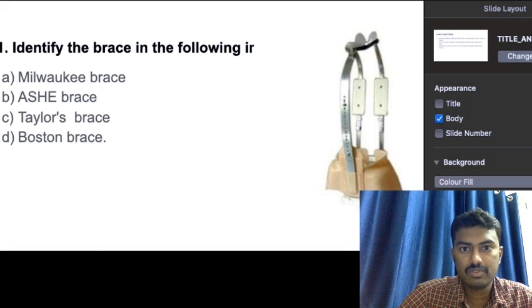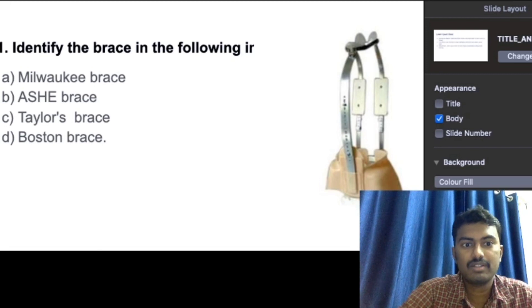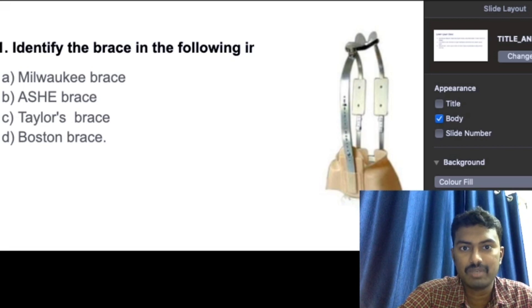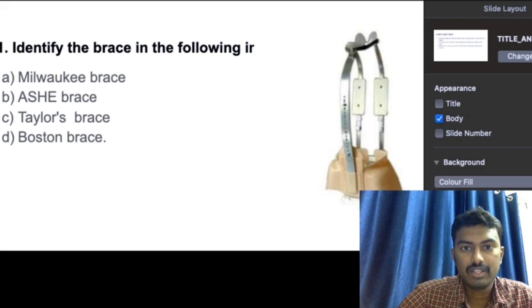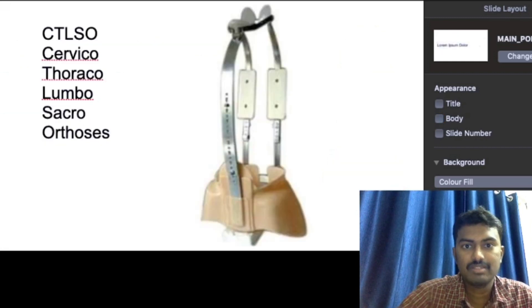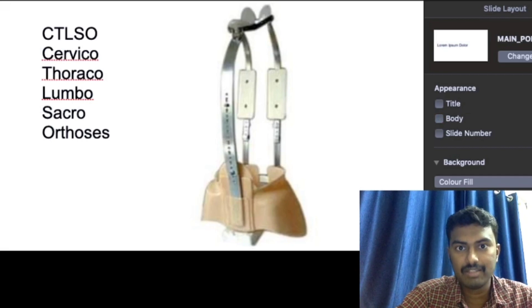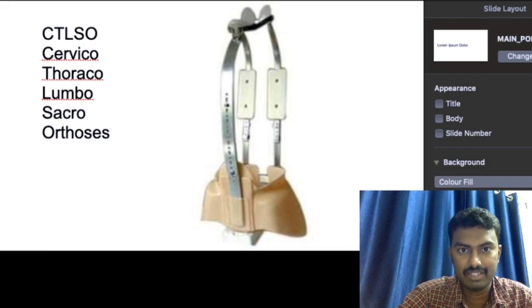The first question is: identify the type of brace given in the following image. The options were Milwaukee brace, Ash brace, Taylor's brace, and Boston brace. The correct answer is Milwaukee brace, also called CTLSO. It stabilizes everything from the cervical spine to the sacral spine.